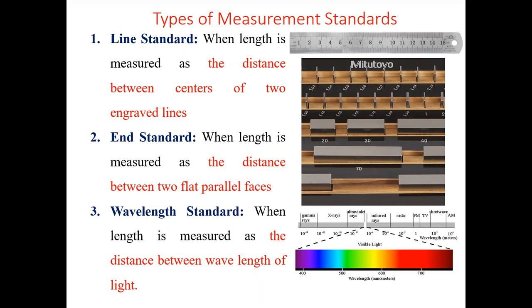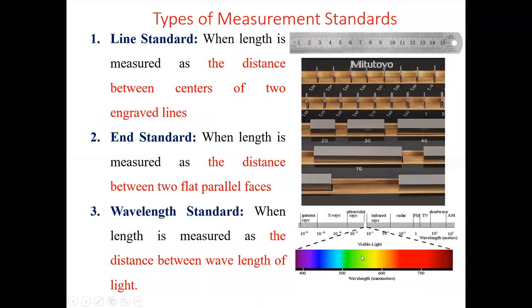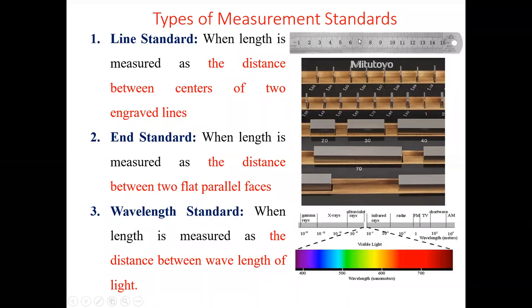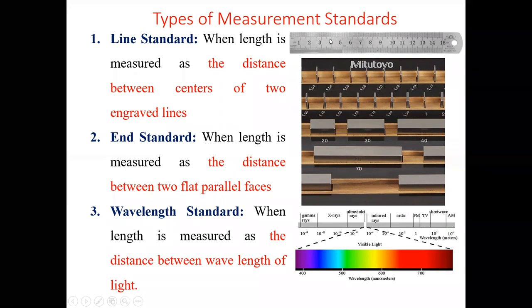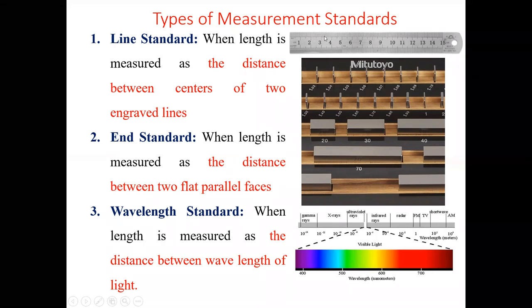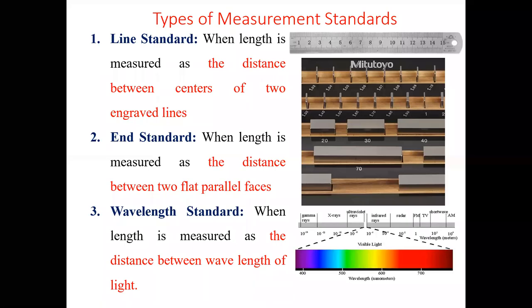Types of measurement standards: there are three standards — line standard, end standard, and wavelength standard. In line standard, the length is measured as the distance between the centers of two engraved lines. The best example for line standard is the steel rule. Number of gradations — simply markings — are engraved on the scale. The distance between two engraved lines, such as between line 2 and line 4, is what we measure. When the length is measured as the distance between centers of two engraved lines, that is called line standard.